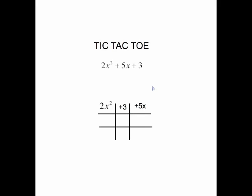So here's the tic-tac-toe method with the same problem. It's called tic-tac-toe for the obvious reason of the tic-tac-toe grid. I have already filled the problem into the top row. But notice the 3 which was the last number is now in the middle position. The 5x is in the last position. The x term will always occupy the third column because this column is going to be our check column.